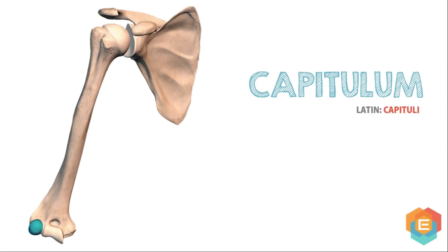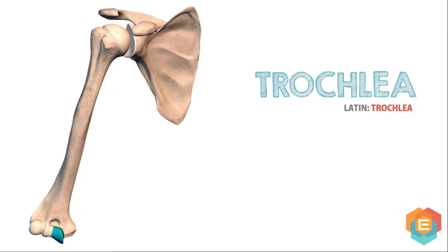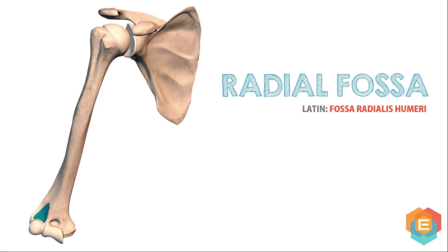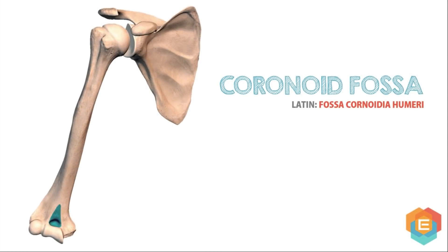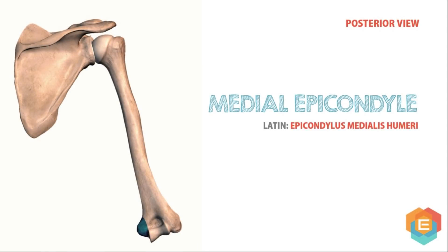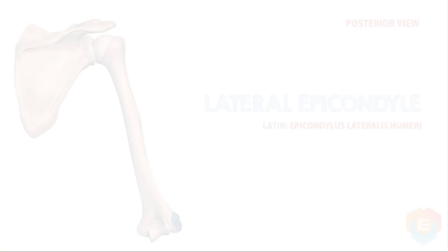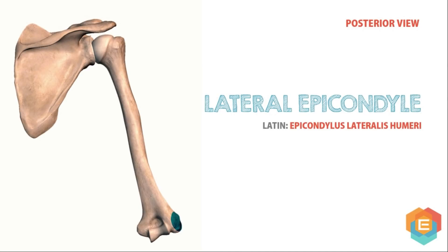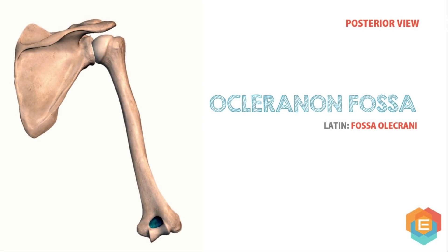Capitulum is a lateral rounded convex projection. Trochlea is a medial pulley-shaped structure. Radial fossa is a small fossa above the capitulum. Coronoid fossa is a small fossa above the trochlea. Medial epicondyle is a prominent projection on the medial side. Lateral epicondyle is a prominent projection on the lateral side, but less prominent than the medial epicondyle. And olecranon fossa is a big, deep hollow on the posterior aspect above the trochlea.